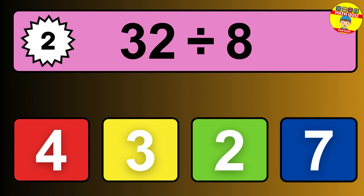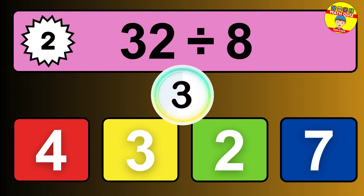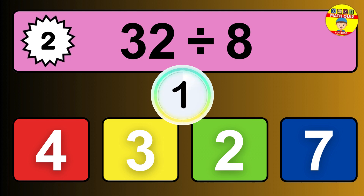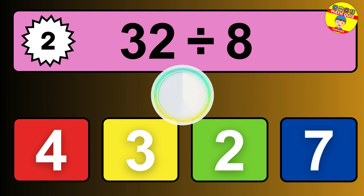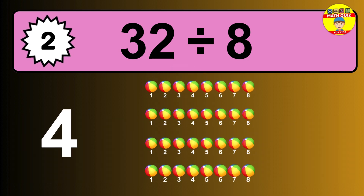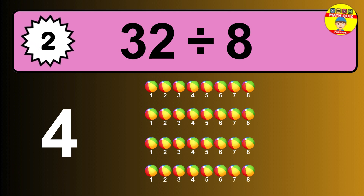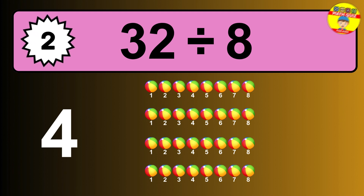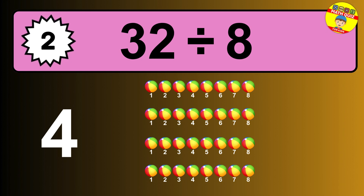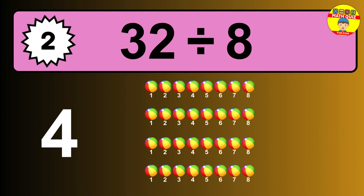32 divided by 8 is... time to think. Let's go to the solution. Divide the number 32 by 8. Each group contains 8 units. So dividing 32 by 8 results in 4 equal groups. Thus, the result is... 32 divided by 8 equals 4.